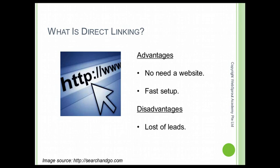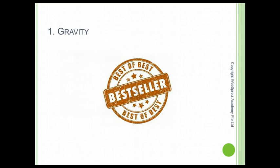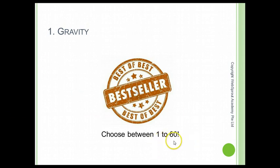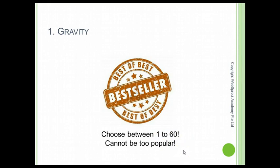Now let me share with you six key critical factors you need to know when selecting a product from ClickBank. First is gravity — as mentioned in a previous lesson, you need to choose something from 1 to 60 for gravity, and never choose something more than 60 or even in the 100 range, because that will be too popular and you'll be competing with a lot of affiliates.